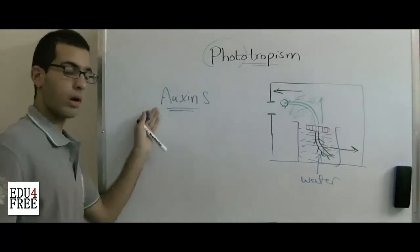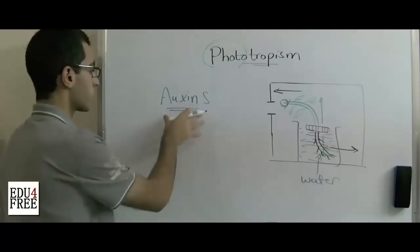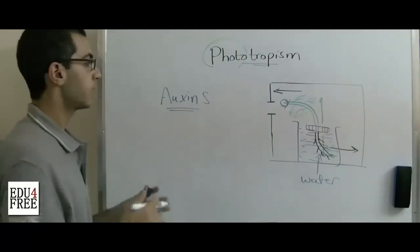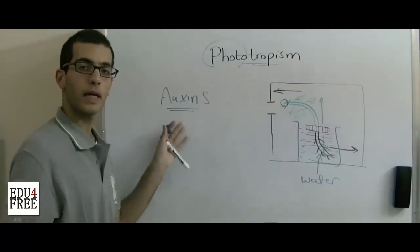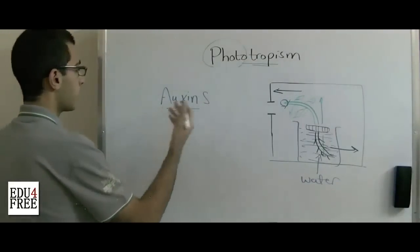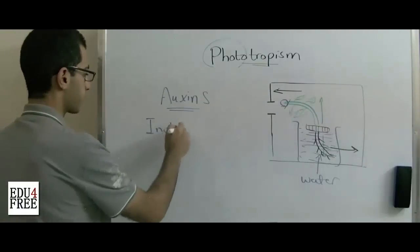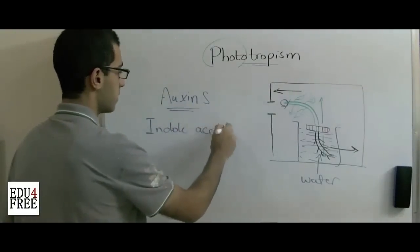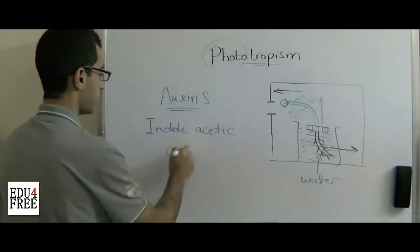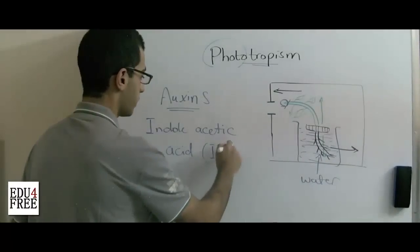So these productions of the tip are called the auxins. These auxins are considered as plant hormones. There are some examples for auxins like indole acetic acid, IAA for short.